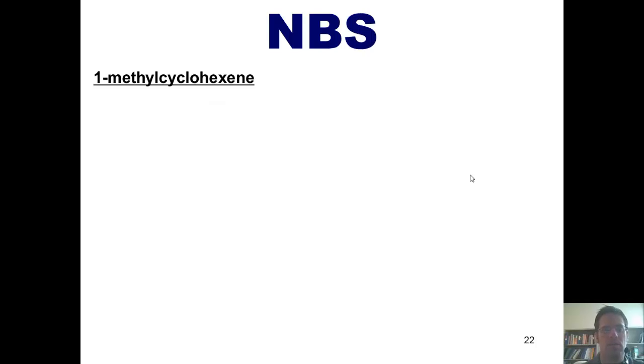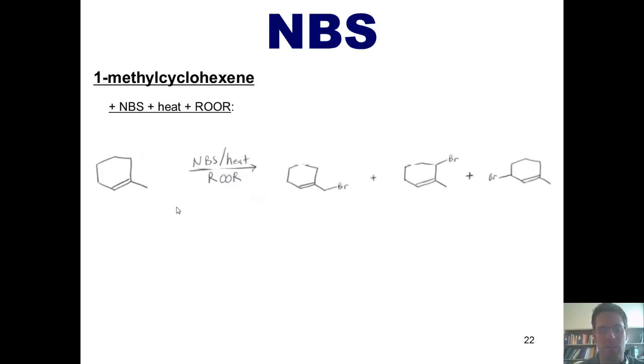Here's the first. One methylcyclohexene being treated with NBS, heat, and peroxide. These are radical conditions. Here's the overall reaction. As I stated before, if you take NBS, heat, and peroxide, and treat an alkene with it, it will always place a bromine one carbon away from the double bond. You should notice that there are three different carbons in this molecule that are one carbon away from the double bond. Thus, this reaction gives rise to three different products.